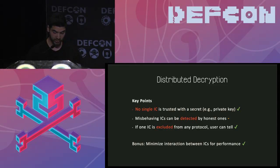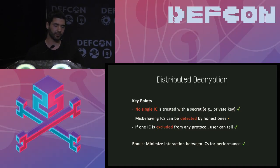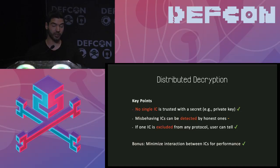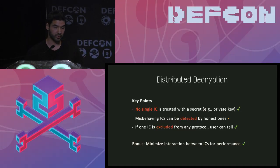We have all key points checked. If a processor misbehaves, since there is no interaction between processors in this protocol, if they send a bad decryption share the final plaintext will make no sense, and the Trojan hardware will essentially reveal its existence - the user will know something is going wrong with their hardware.